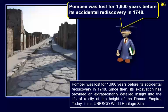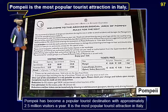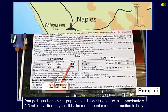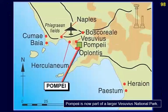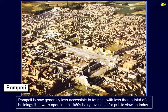Since its rediscovery, excavation of Pompeii has provided an extraordinarily detailed insight into the life of a city at the height of the Roman Empire. Today it is a UNESCO World Heritage Site. Pompeii has become a popular tourist destination with approximately 2.5 million visitors a year — the most popular tourist attraction in Italy. It is now part of a larger Vesuvius National Park, though less than a third of all buildings that were open in the 1960s are available for public viewing today.